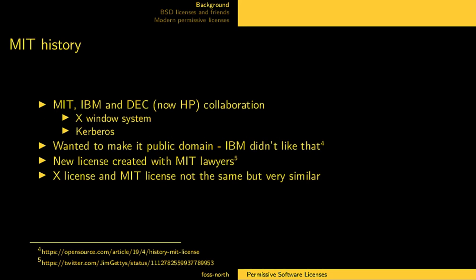Then we have some MIT history as well. In the 80s, MIT, IBM, and DEC worked on a big software system that was supposed to be used on campuses. Two of the main things that came out of that were the X Window System and Kerberos, which is a security protocol. The developers at MIT wanted to make this public domain, but because it was a collaboration with IBM, they weren't allowed to — IBM had a policy to never work with software in the public domain; it had to be under a specific license. So the license was created together with some lawyers at MIT, and it became the X license.